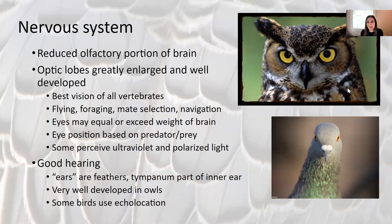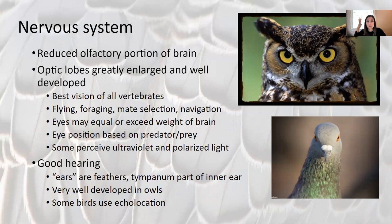Hearing in birds is good. The ear tufts you see on a great horned owl aren't actually ears — they're just feathers, but they funnel in sound and improve hearing. The tympanum in birds is part of the inner ear, so unlike frogs where you see the tympanum as part of the external ear, you don't see it in birds. Owls are very well developed in both sight and hearing, and some birds can even use echolocation to identify prey.